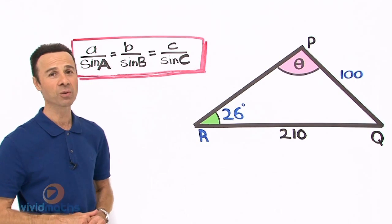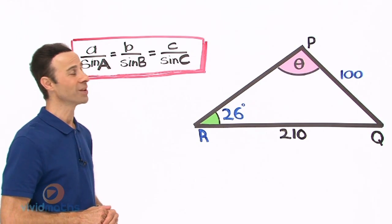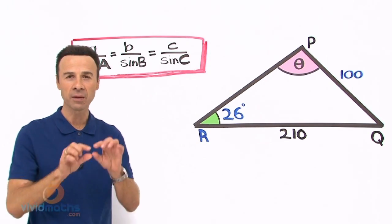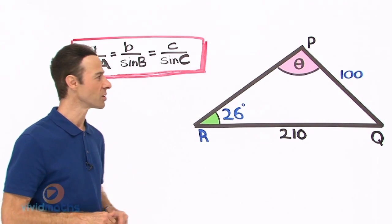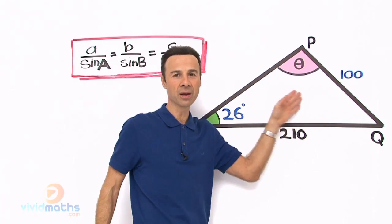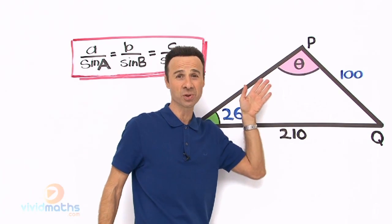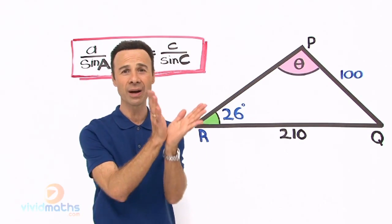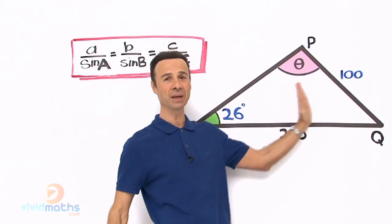It says find the angle theta if it is obtuse in fine print. That means that this is the angle we are looking for theta right around here and you might notice that it does look obtuse, obtuse meaning as you know greater than 90 degrees so that looks kind of big doesn't it?